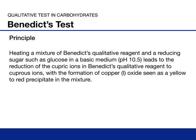Heating a mixture of Benedict's reagent and a reducing sugar such as glucose leads to the reduction of the cupric ions in Benedict's reagent to cuprous ions, with the formation of copper oxide, seen as a yellow to red precipitate in the mixture.